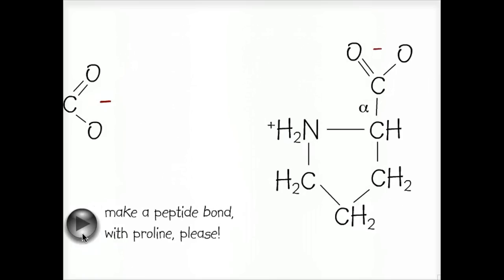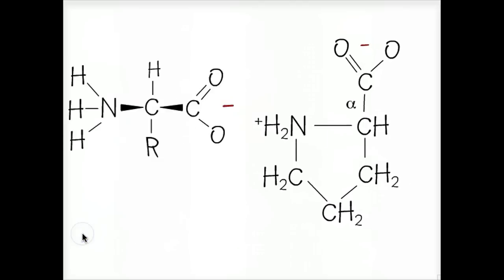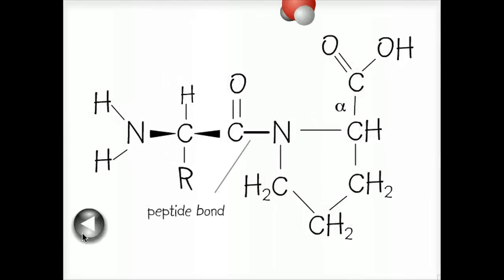Up to this point, we've been talking about peptide bonds made between amino acids, but things are a little different when we use the amino acid proline. Here we're going to make a peptide bond with a proline added on to the C-terminus of a polypeptide. You can see the peptide bond — now you can ask yourself where the next peptide bond would be made. A little different from the way it was before.